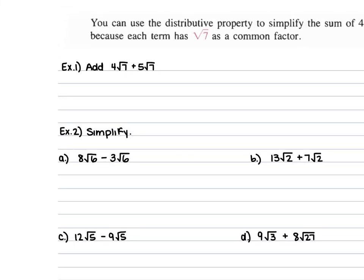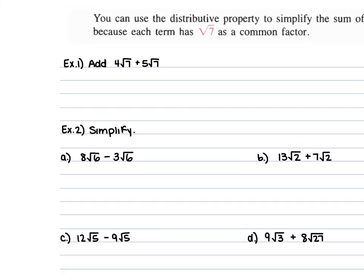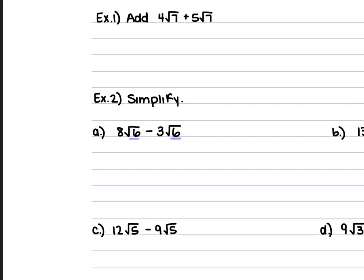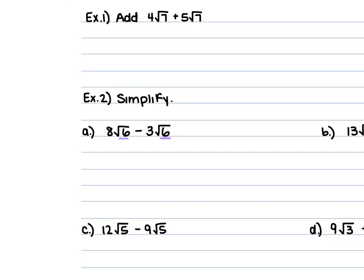Looking at our first example, we have 8 square root of 6 minus 3 square root of 6. The square root of 6 is the same on both terms, so we're just combining the terms in front: 8 minus 3 is 5. Keep the square root of 6, giving us 5 square root of 6.